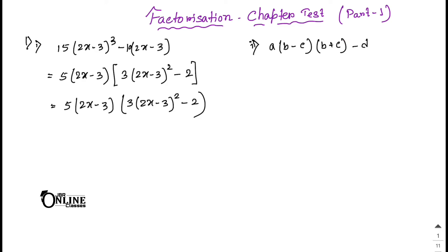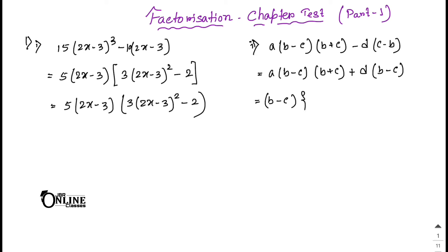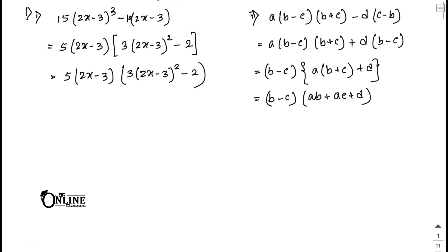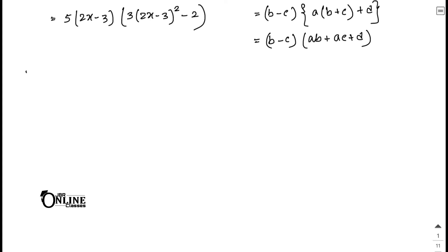Write down a into (b minus c). For the next term, common out minus, so d into (c minus b) becomes plus d into (b minus c). Now (b minus c) is common, so the answer is (b minus c) into (a plus d). Multiplying out: ab minus ac plus d.